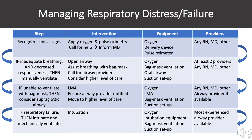The first step in airway management is recognition of respiratory distress or failure. Once recognized, the provider must quickly apply oxygen and pulse oximetry, and this should also initiate a call for help. If the patient is not breathing adequately to maintain oxygenation, then manual assistance of breathing is indicated using a bag and mask device. If the airway has obstruction, it must be opened using the head tilt and jaw thrust, or by inserting an oral or nasopharyngeal airway device prior to bag ventilation.